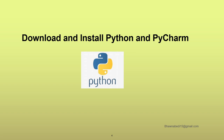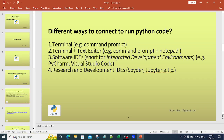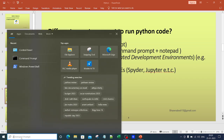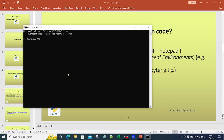We will be looking at the different ways in which we can run Python code, and then proceed with downloading and installing both Python as well as PyCharm. When we talk about different ways to run Python code, we can do it through the terminal. Once you install Python, you can go to your Windows search option, type in command prompt, and click open.